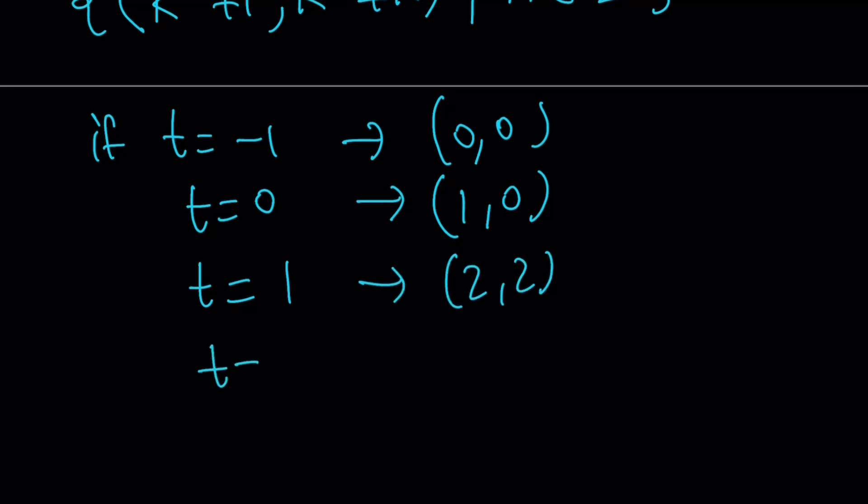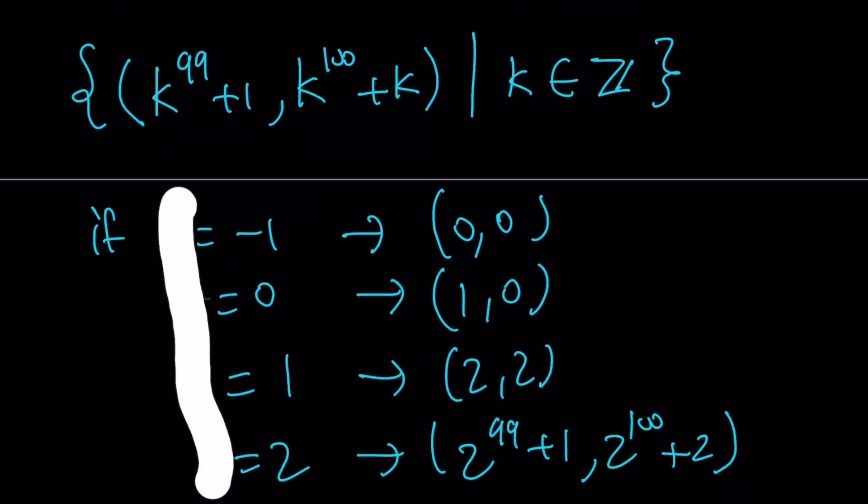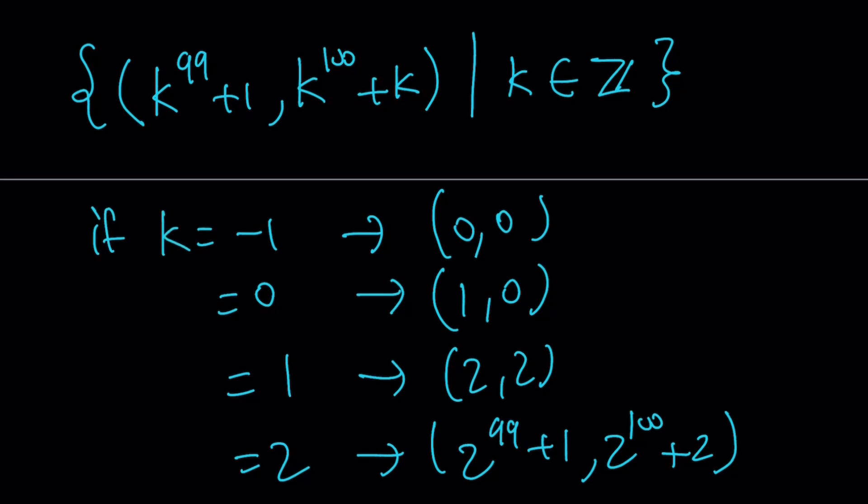If t is equal to 2, then things start going crazy. We get 2 to the power 99 plus 1, 2 to the power 100 plus 2, as verified by this. And did I say t? I'm supposed to say k. I don't know why I keep saying t. They're all supposed to be k. Okay, I'm kind of stuck on t.